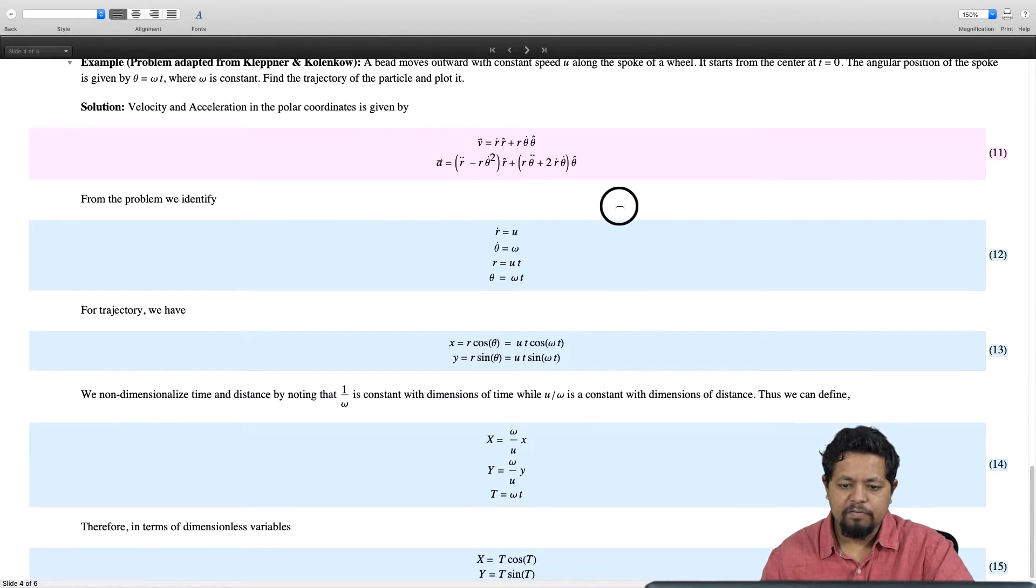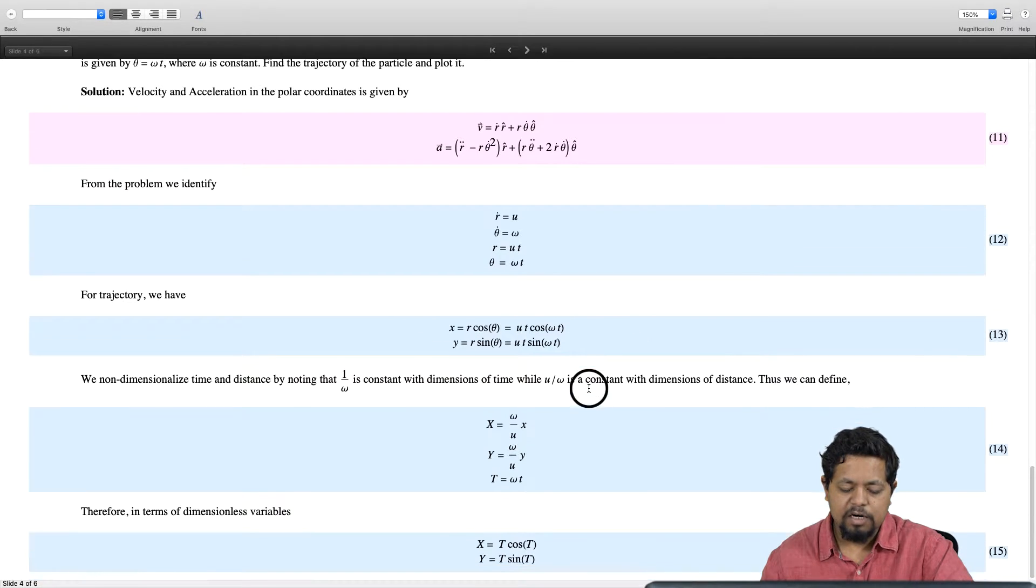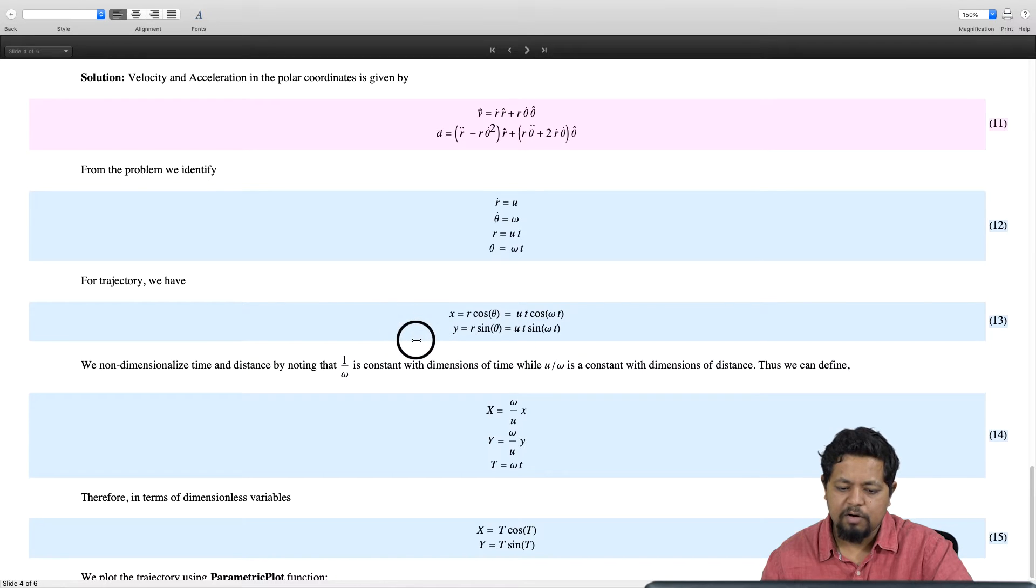We started out with polar coordinates because in polar coordinates it was really straightforward to set up this problem. We have converted into Cartesian coordinates, which is what we are going to use to plot. For Cartesian coordinates we have obtained the x and y coordinates.